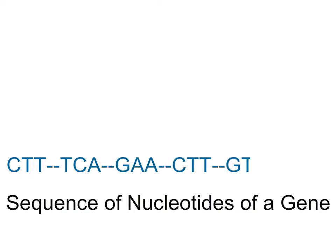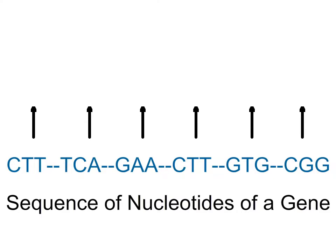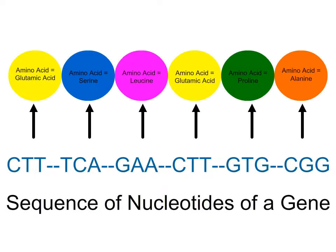Here's the nucleotide sequence for a portion of a gene. Within this sequence, groups of three nucleotides will correspond to a very specific amino acid. As you can see, the first three nucleotides — cytosine, thymine, and thymine — correspond to the amino acid glutamic acid.